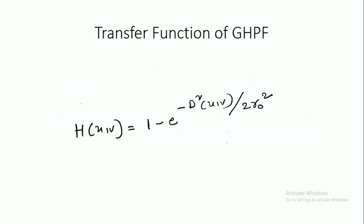The transfer function of the Gaussian high pass filter is given as H(u,v) = 1 minus e to the power of minus D squared of (u,v) divided by 2 r-naught squared. In some textbooks, in the place of r-naught, they use sigma-naught. Here, r-naught and sigma-naught are both the same — that is nothing but the cutoff frequency.